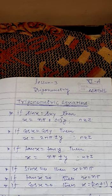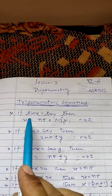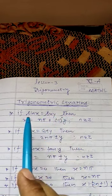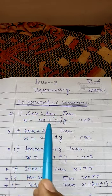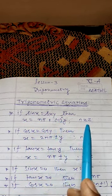First of all, we will learn some identities which are applicable in trigonometric equations. The first identity is: if sin x equals sin y, then the value of x will be nπ plus minus (-1)^n y, where n belongs to the integers.